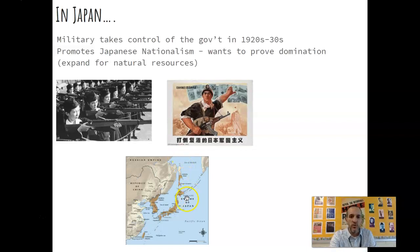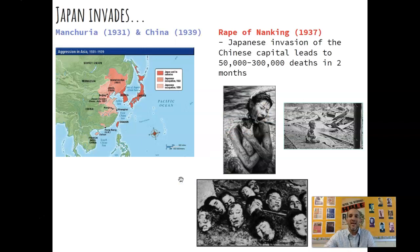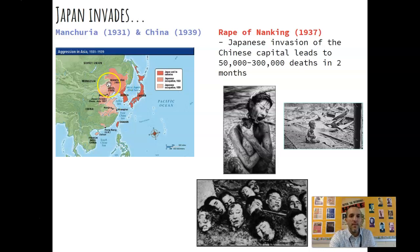Japan also lacks natural resources. As an archipelago, they took over parts of Korea and parts of Russia during imperialism, and they want to expand further for natural resources to continue their industrialization. In 1931, they invade Manchuria. The Manchus are the ones who ruled over the Qing dynasty. And in 1939, they make a push into what is considered mainland China.